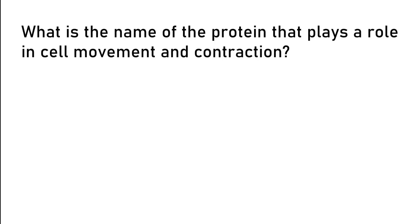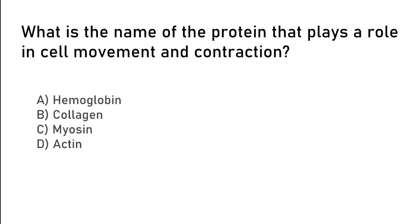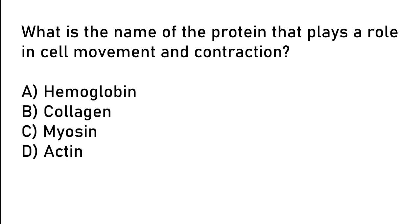What is the name of the protein that plays a role in cell movement and contraction? Hemoglobin, collagen, myosin, actin. So the correct answer is option D. Actin.